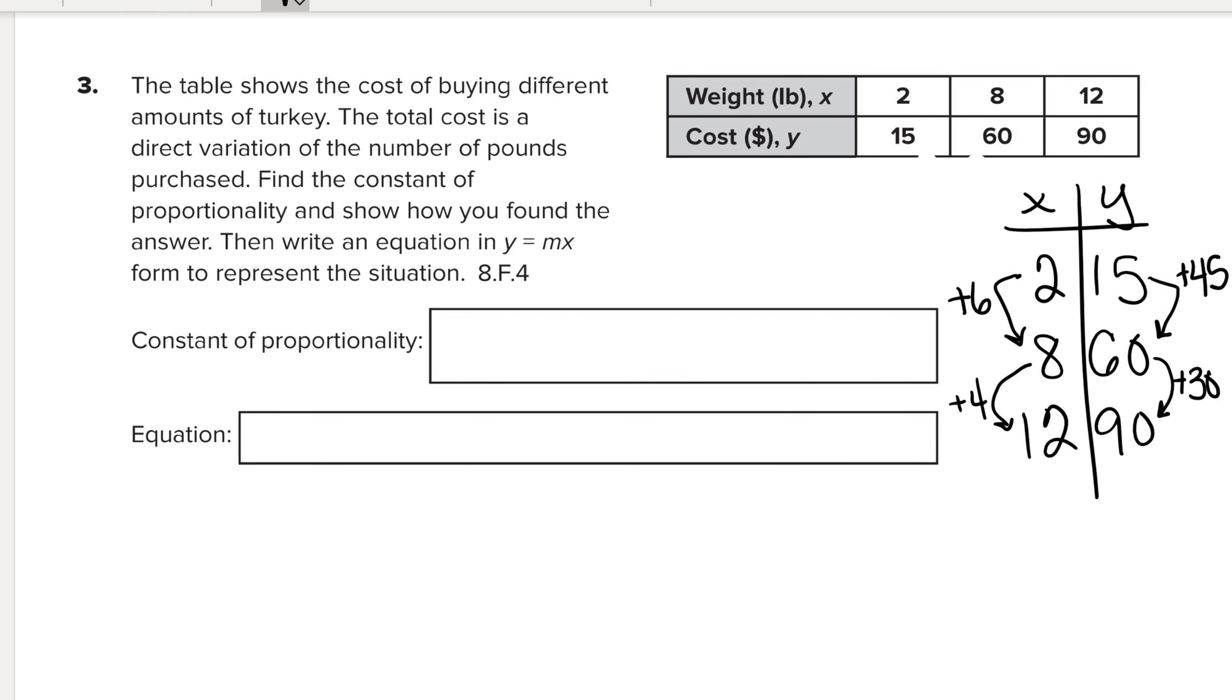So if I write those two proportions, the rate of change is the y over the x. So that means I have 45 divided by 6 and I have 30 divided by 4.